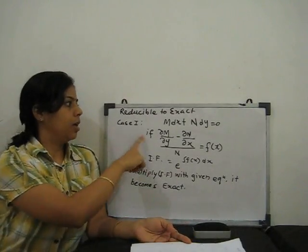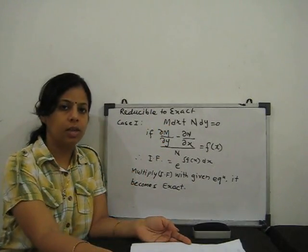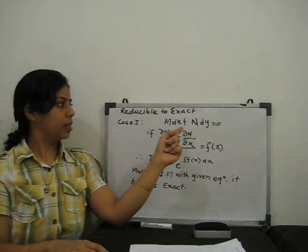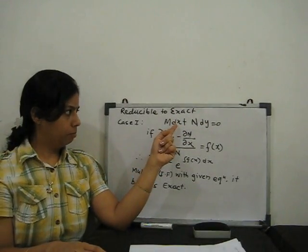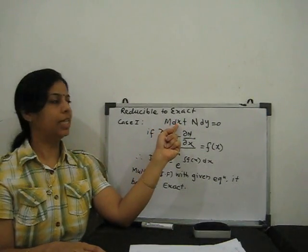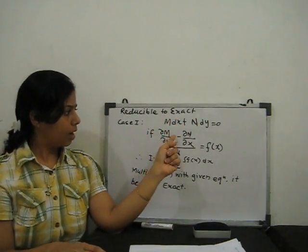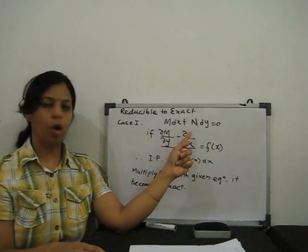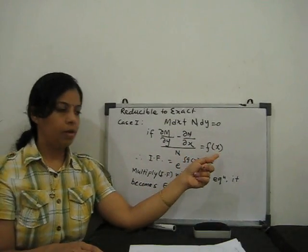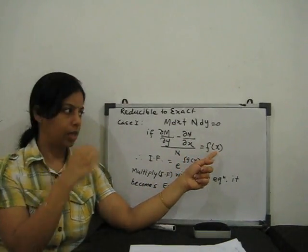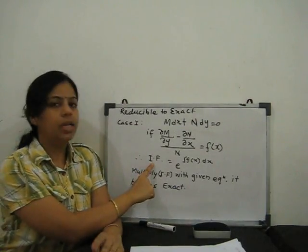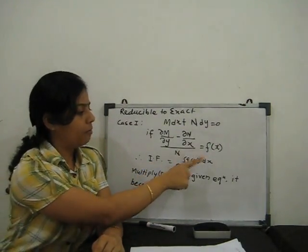Case 1: if our given equation is M dx + N dy = 0, where M is the coefficient multiplied with dx and N with dy. If we find that ∂M/∂y is not equal to ∂N/∂x, but when we subtract and divide by N and the result is a function of x only, then our integrating factor is e to the power ∫f(x) dx.